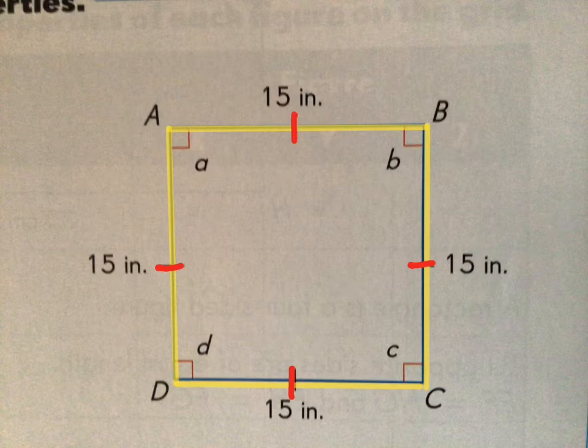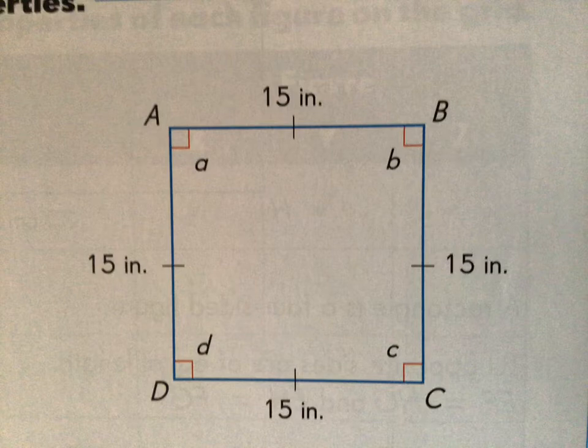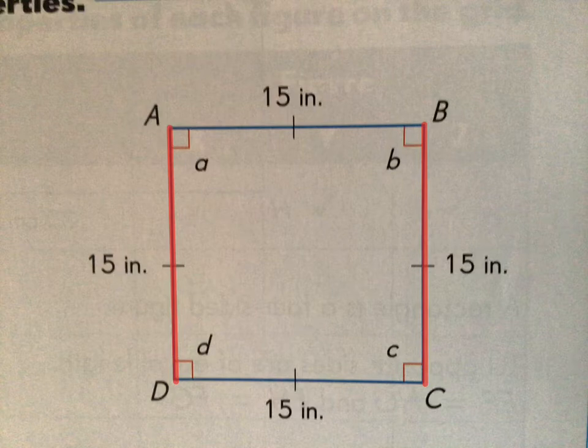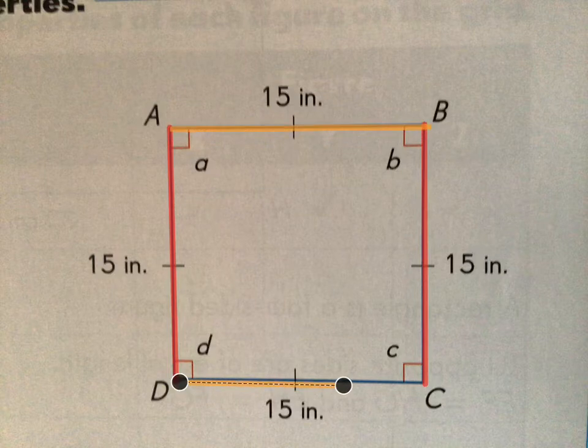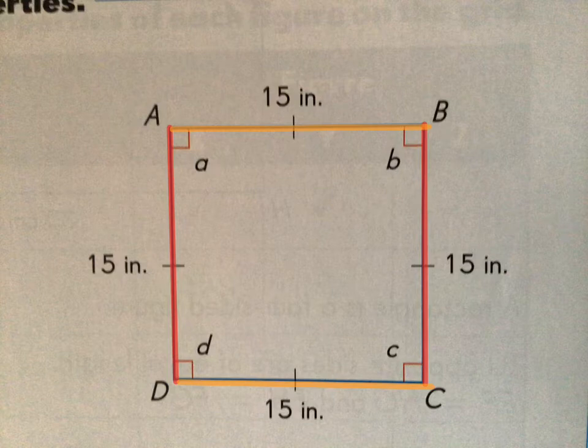Now in a square, the opposite sides are also parallel. So let's first look at this pair of parallel sides. We have AD is parallel to BC, so that's one pair of parallel sides. And then we have AB is parallel to DC. That's the second pair of parallel sides. So in a square, opposite sides are parallel, and a square has two pairs of parallel sides.